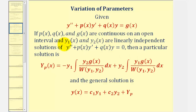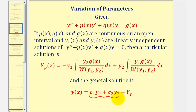Therefore we can use y sub one, y sub two, and y sub p to form the general solution to the non-homogeneous differential equation, given by y of x. We should also notice that the sum of the first two terms, which is the general solution to the homogeneous differential equation, is often called the complementary function, or y sub c.